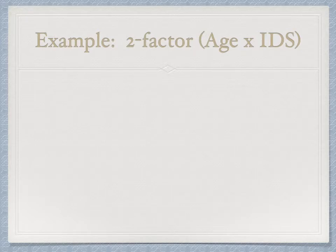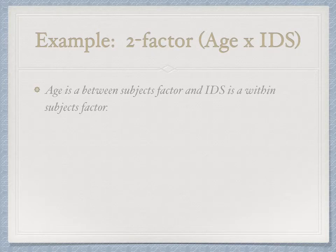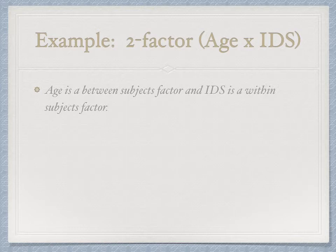Here's a research example from my own work. It's technically a factorial design with two independent variables: age, which is a between-subjects factor since we're testing four-month-olds and a separate group of six-month-olds; and the kind of infant-directed speech (IDS), which is a within-subjects factor — infants get both conditions of infant-directed speech. Infant-directed speech is the exaggerated way we talk to babies, and we're looking at two categories: comforts and approvals.